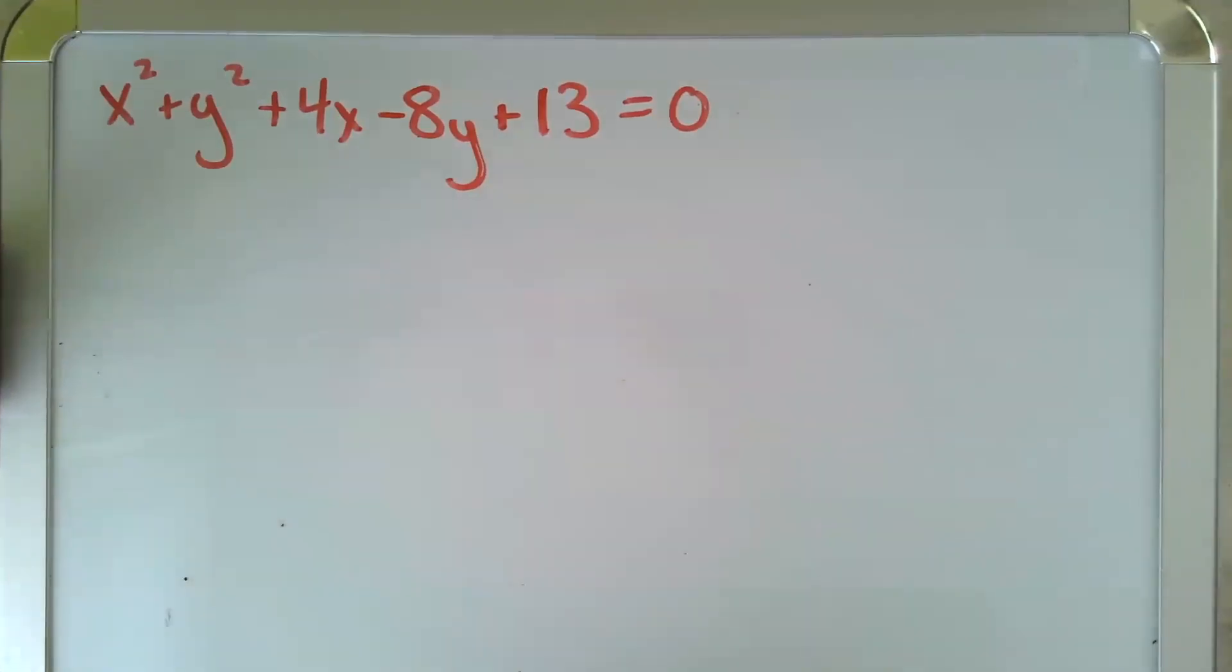So to remind you, standard form looks like this: x minus h squared plus y minus k squared equals r squared.